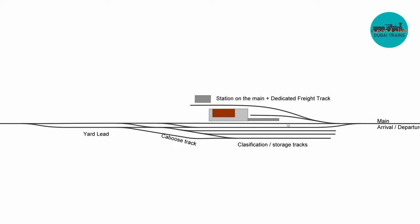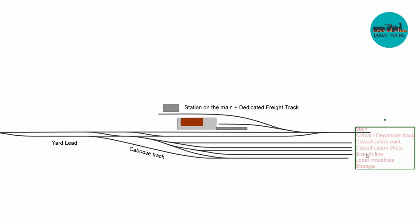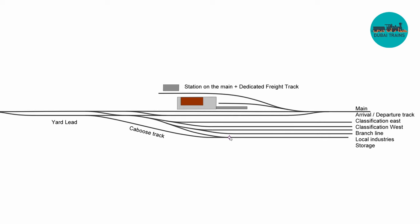Let's plot in the station we had earlier — it fits in nicely on the main line. For the classification tracks, each needs a purpose. The first track is your main line, the second is the arrival and departure track. Classification tracks can be assigned to: eastbound traffic, westbound traffic, branch line, local industries, storage, and overflow. Tracks can also switch destinations throughout the day — the branch line might go out in the morning and return in the evening, letting you reuse that track for other purposes.